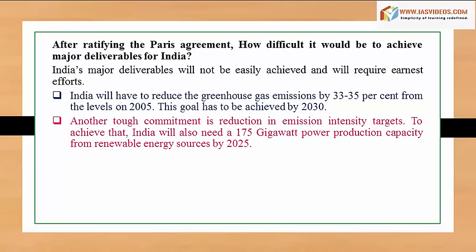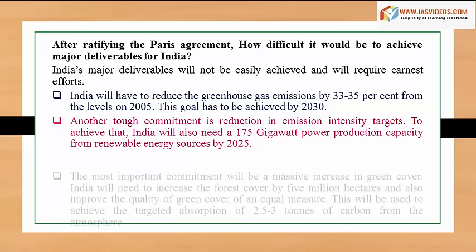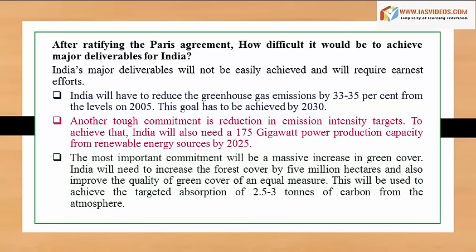Another tough commitment is the reduction in emission intensity targets. To achieve this, India will need a renewable energy production capacity of 175 gigawatts by 2025. The most important commitment will be a massive increase in green cover — India will need to increase forest cover by 5 million hectares and improve the quality of green cover by an equal measure, targeting the absorption of 2.5 to 3 billion tons of carbon from the atmosphere.